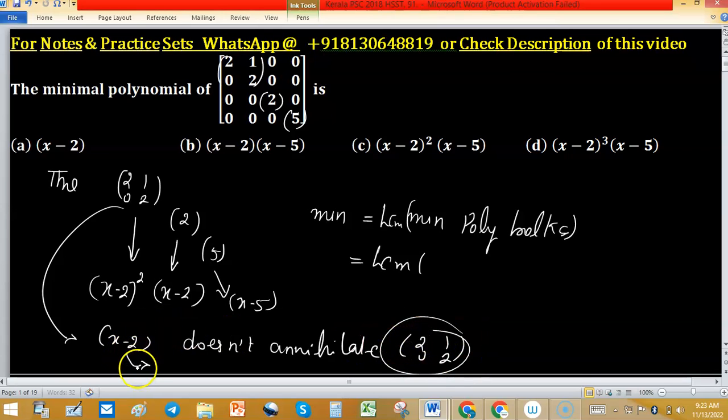into the polynomial, then we couldn't get 0. That's why it's (x minus 2) whole square—because of the upper triangular matrix and eigenvalues are diagonal elements.